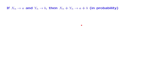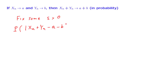Now let us turn to convergence of random variables. We fix some positive epsilon. In order to show convergence in probability, we want to look at the probability that |Xn plus Yn minus a minus b| is bigger than epsilon in magnitude, and we want to show that this quantity converges to 0. If it does, we will have established convergence in probability, because that's just the definition.